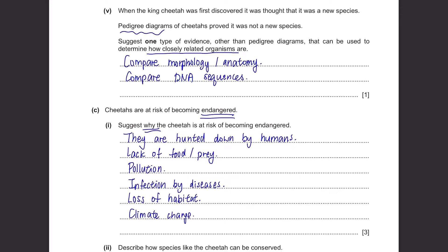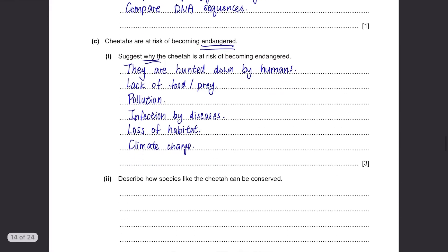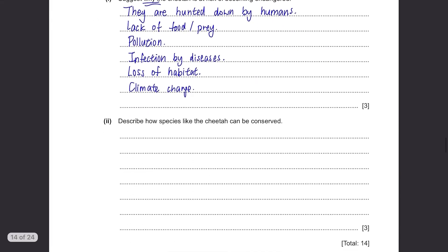We have more than enough points but it's good to memorize all of them since this can be asked in paper 2 or just asked in a different way. Describe how species like the cheetah can be conserved.